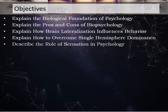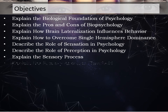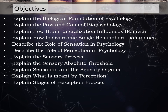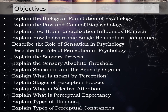Describe the role of sensation in psychology. Describe the role of perception in psychology. Explain the sensory process. Explain the sensory absolute threshold. Explain sensation and the sensory organs. Explain what is meant by perception. Explain stages of perception process. Explain what is selective attention. Explain what is perceptual expectancy. Explain types of illusions. Explain types of perceptual constancies.